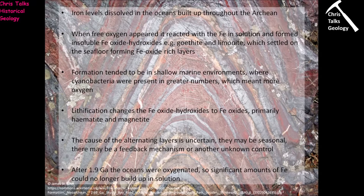Once the sediment gets lithified, the iron oxide hydroxide minerals like goethite and limonite alter and form iron oxide minerals, primarily hematite and magnetite. It's the hematite and magnetite that we can see in the rocks now — visible as sub-metallic grey minerals. One question we need to answer is why we have these alternating layers of silica and iron oxide minerals.